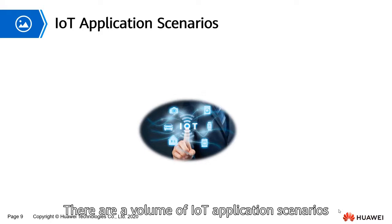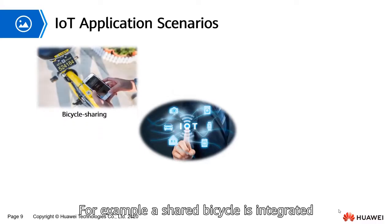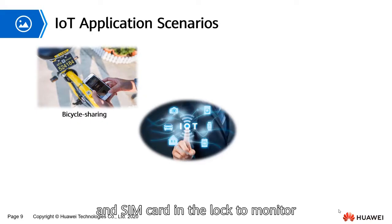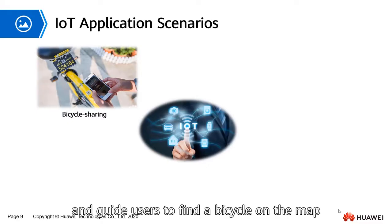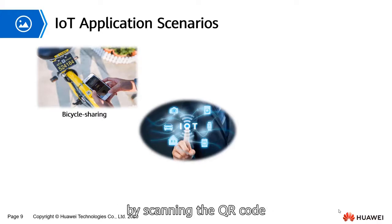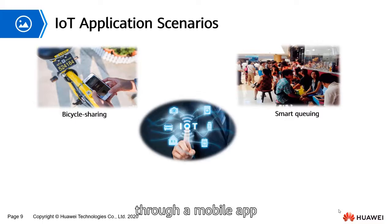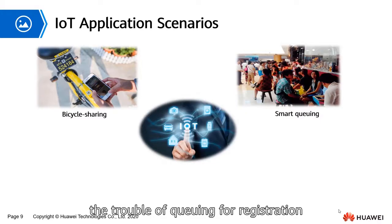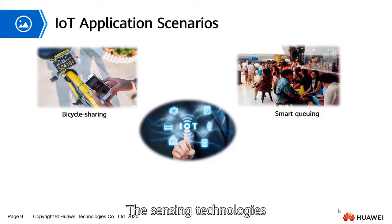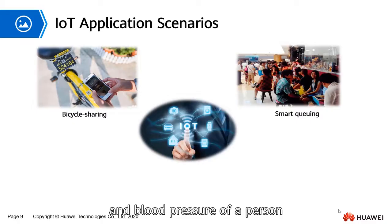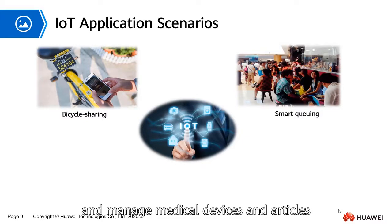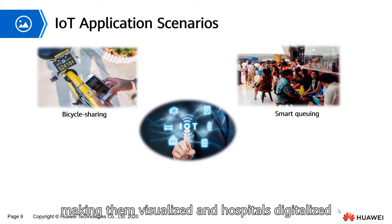There are a volume of IoT application scenarios. For example, a shared bicycle is integrated with an embedded chip, GPS module, and SIM card in the lock to monitor the location of the bicycle at any time. A mobile APP is used to display nearby bicycles and guide users to find a bicycle on the map. Users can unlock the bicycle by scanning the QR code, and the APP supports online payment and cycling route recording. In the Smart Healthcare scenario, patients can easily get registered through a mobile APP, effectively reducing the trouble of queuing and preventing scalpers from selling high-price tickets. Sensing technologies can remotely monitor physiological status such as heartbeat frequency, energy consumption, and blood pressure.